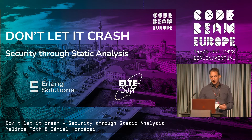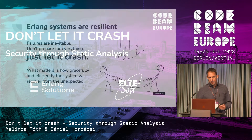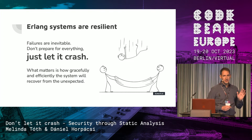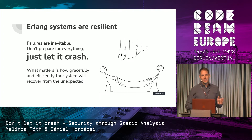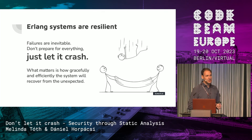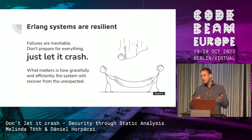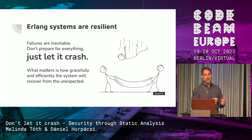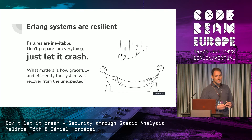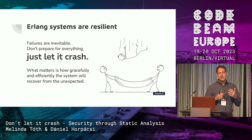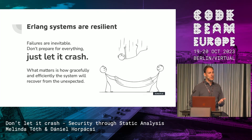We know that Erlang systems are resilient and robust, and we love it. It's due to the system's ability to self-heal. So if something goes wrong, the system is going to make sure that if processes go down, something crashes, it's going to recover. And this is amazing. This actually allows programmers to use the principle of let it crash.